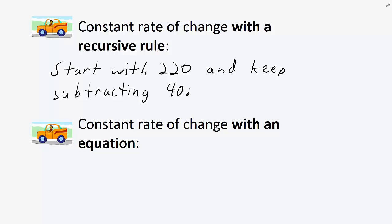We can see the constant rate of change with an equation. The distance from San Diego equals 220 minus 40 times the number of hours.